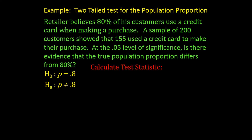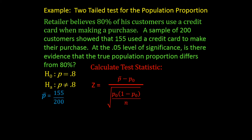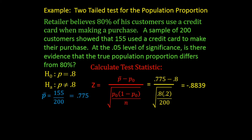The next step is to calculate the test statistic. For proportions, the test statistic is a z-test with p-bar minus p-naught divided by the standard error for p-bar, which is the square root of p-naught times 1 minus p-naught divided by n. We first calculate p-bar from the sample: 155 divided by 200 equals .775. Plugging in the numbers, .775 minus .8 divided by the square root of .8 times .2 divided by 200 gives us a test statistic of negative .8839.